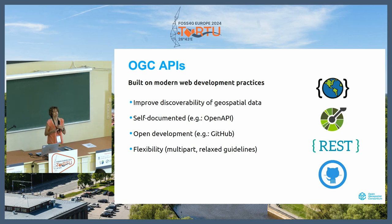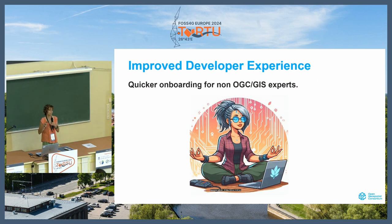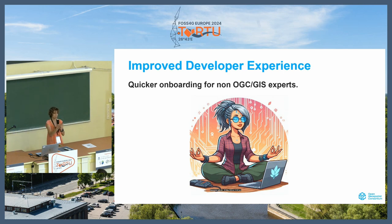The development of these standards is similar to development of open source projects — it's at the public eye, on GitHub repositories, and anyone can inspect the state of the standard and can even contribute through the normal mechanisms: issues, pull requests, and so on. The goal of all this was to improve the developer experience, especially for developers that don't come from the GIS domain or don't have any knowledge about OGC services. The idea was to make these standards accessible and not to have such a steep learning curve as we saw in the first generation of OGC services.